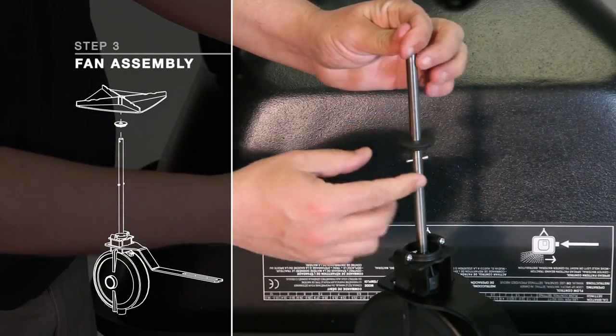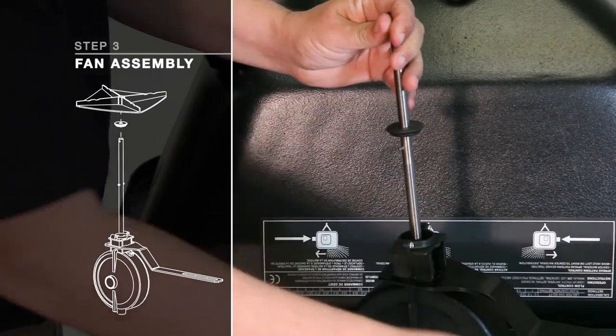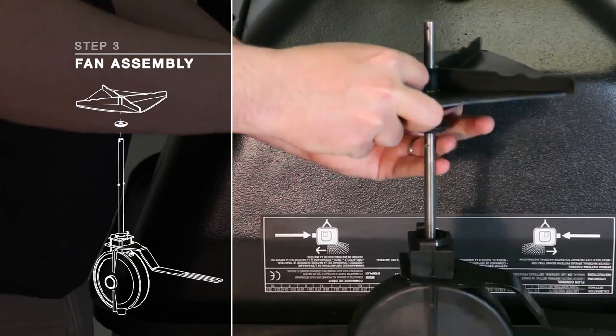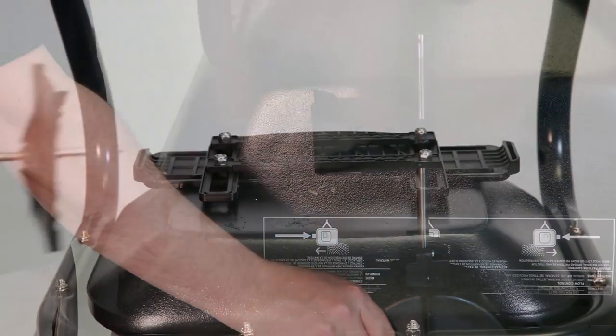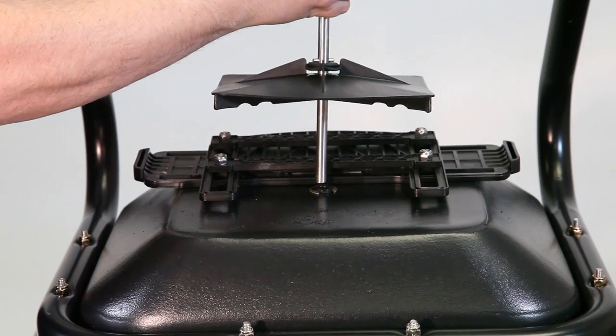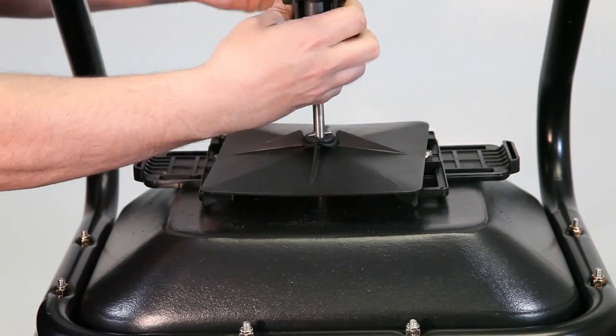Slide the fan driver number 24 and fan number 25 onto the shaft of the transmission assembly number 21 until both reach the pin spring number 23. This is for pre-assembly only. Final adjustment of the fan is made later.